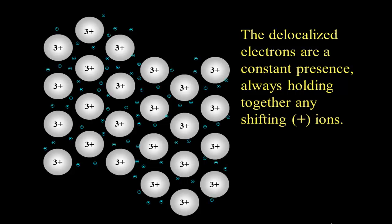Well, the delocalized electrons are always there. So any shifting positive ions are going to be able to be held together by their attraction to the constant presence of those valence electrons, that sea of electrons that the atoms are attracted to.